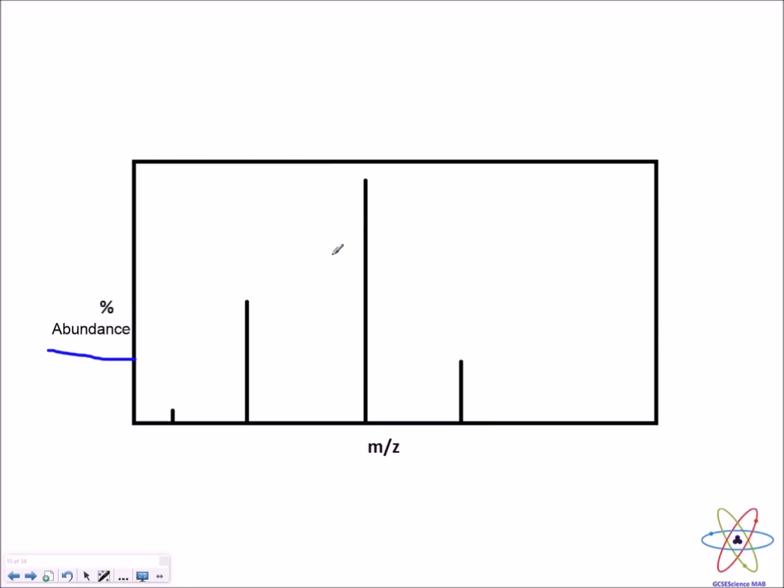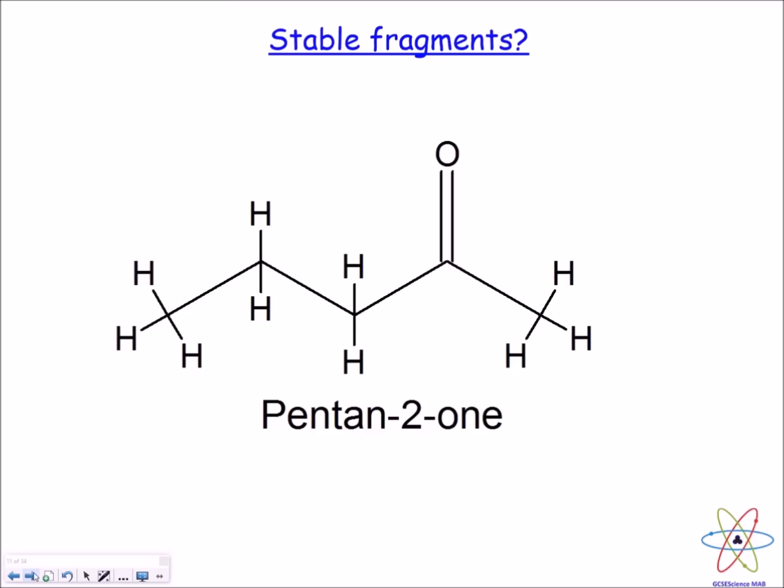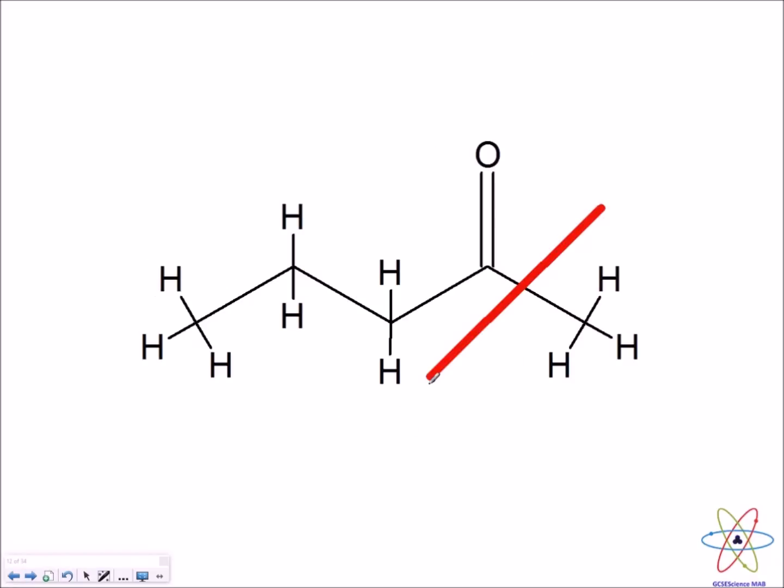The more common a fragment is, the more stable that it's going to be. Now, to illustrate this idea of stable fragments, I'm going to use the example pentan-2-one. This molecule can fragment at various different sites, however, one particular cleavage or fragmentation will be more preferred than others.